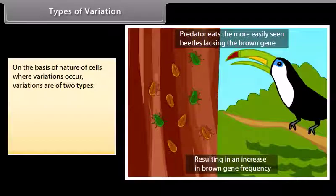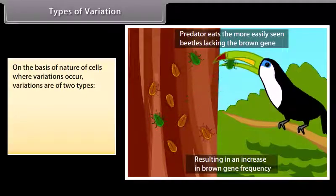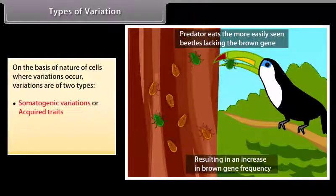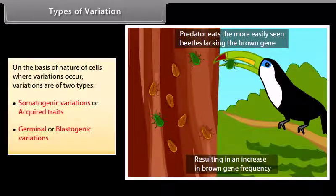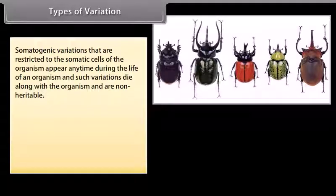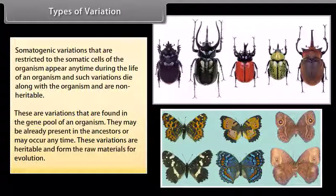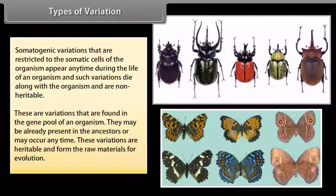On the basis of nature of cells where variations occur, variations are of two types: somatogenic variations or acquired traits, and germinal or blastogenic variations. Somatogenic variations are restricted to the somatic cells of the organism, appear any time during life, and such variations die along with the organism and are non-heritable. Germinal variations are found in the gene pool of an organism, may be already present in ancestors or may occur any time. These variations are heritable and form the raw materials for evolution.